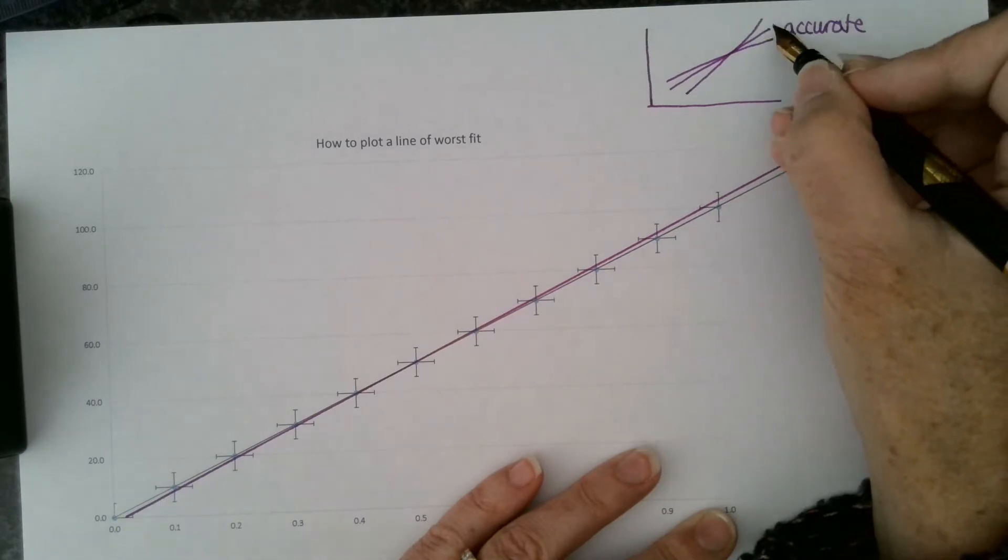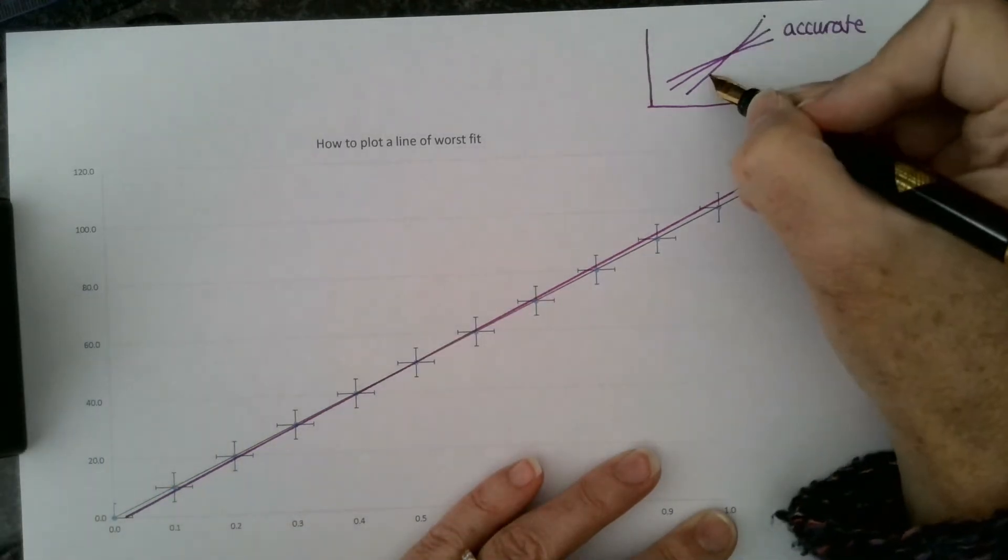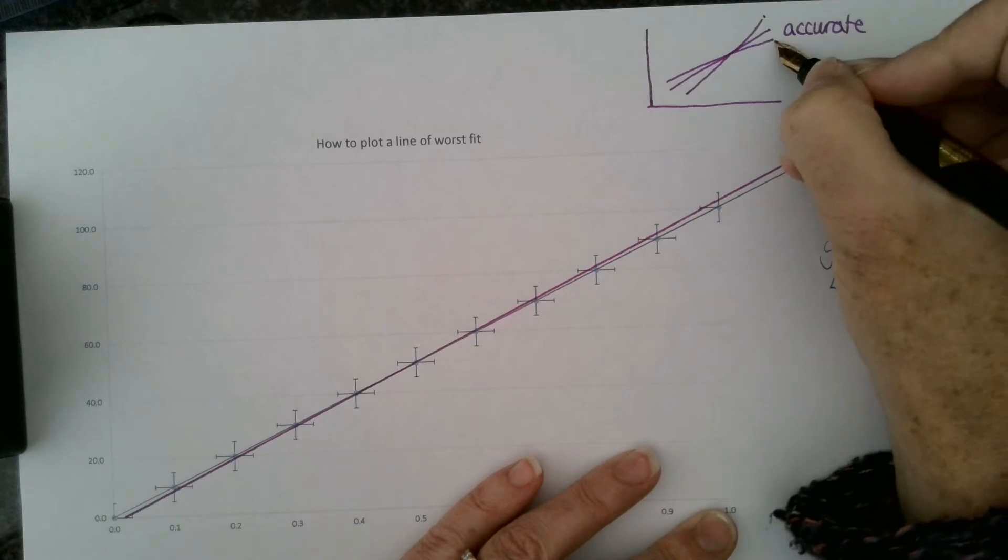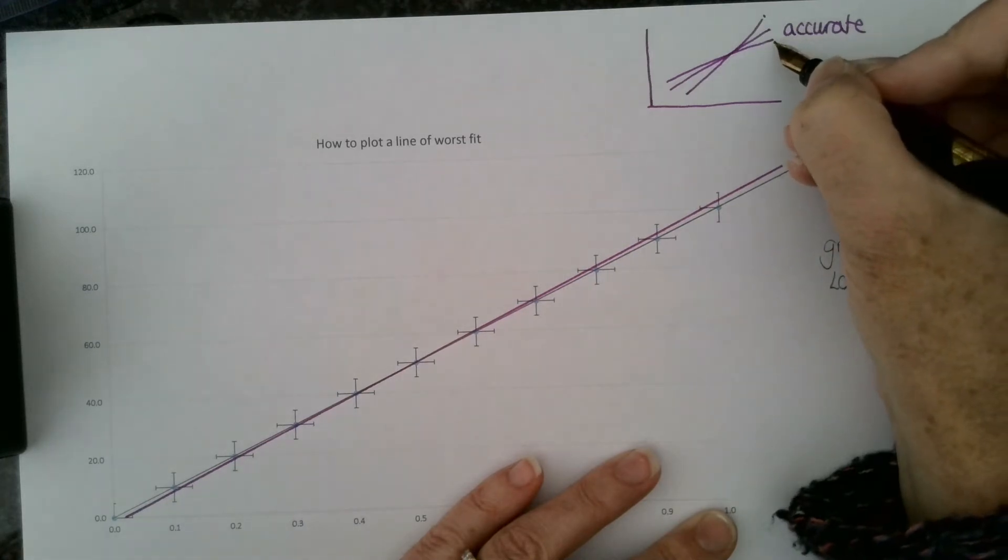You have one gradient of worst fit here which is the steepest, and one here which is your shallowest gradient of worst fit. If you calculate those two gradients and find the midpoint, it should equal your line of best fit.